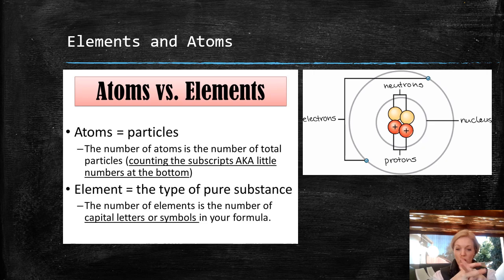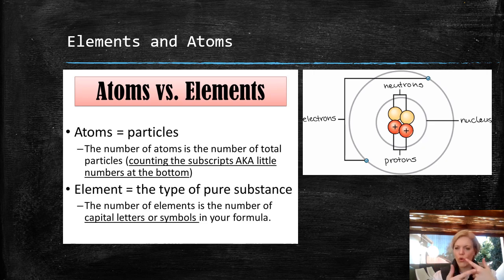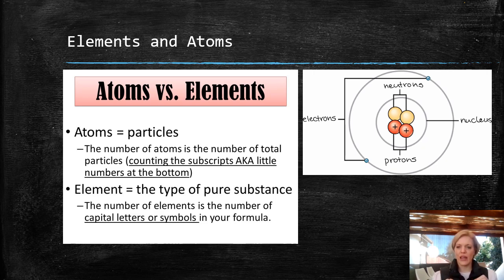In that nucleus you have neutrons and protons. Protons are positively charged; neutrons are neutrally charged. And around that heavy nucleus there are light electrons that are spinning around the nucleus all the time. That is your basic anatomy of an atom — that makes up your atom. The electrons are negatively charged.